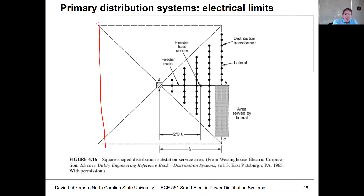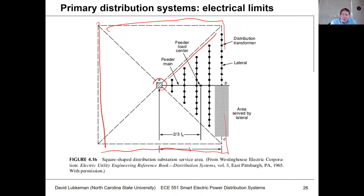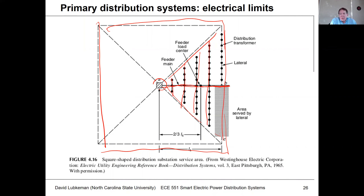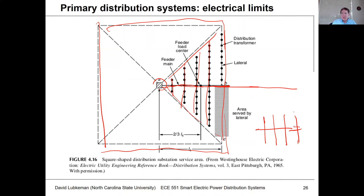From an old Westinghouse design manual: if you had a square area that you needed to supply service to, you would maybe start by putting a substation in the middle and breaking up into four different triangular-shaped areas. Then you'd have a main feeder coming out of the substation, and off this main feeder you'd have laterals, assuming that the load is going to be uniformly distributed. Another topology would be to assume that instead of having a linearly increasing load along the feeder, it's more uniformly distributed.